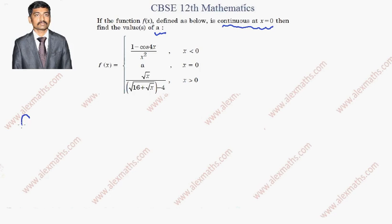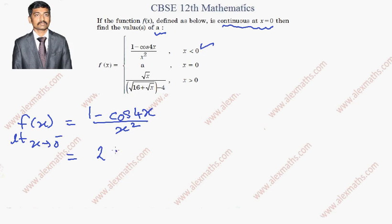Since it is given continuous, we will take f(x) limit extending to 0 minus. For 0 minus it is less than 0, so I'll take the first function: 1 minus cos 4x whole divided by x square. 1 minus cos 4x is 2 sine square 2x whole divided by x square.